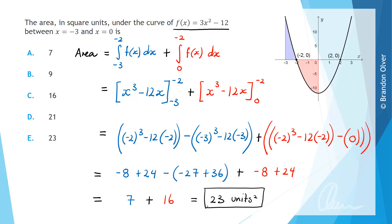That's why answer E was the correct answer on the previous slide. The 7 represents the area of the blue region, and the 16 — which became positive because we swapped the terminals (the calculator had shown it as -16) — is the area of the red region. Adding both areas gives 23 units squared, which is the answer to this question.